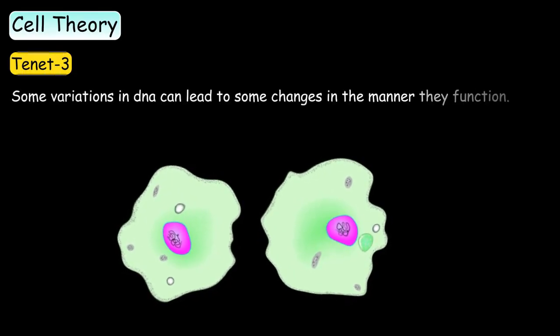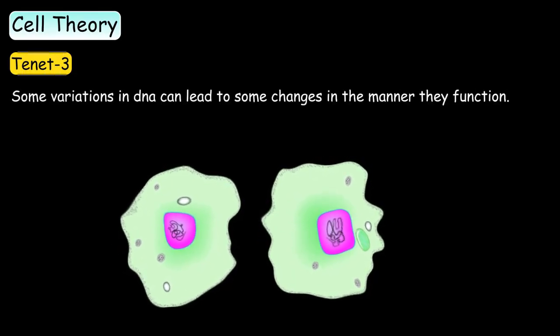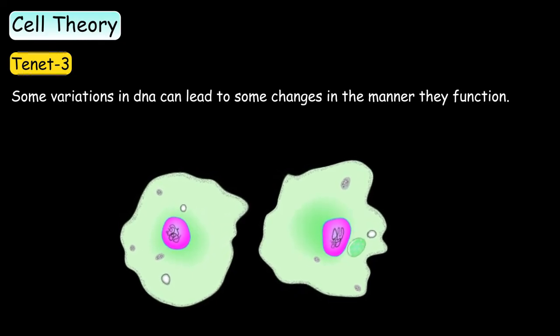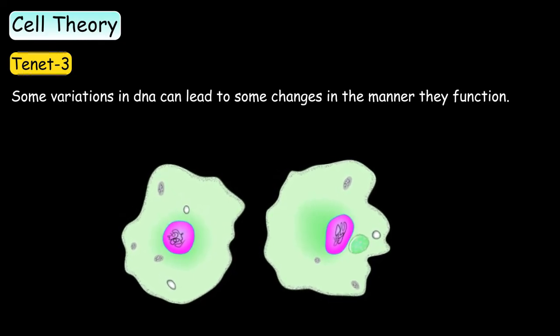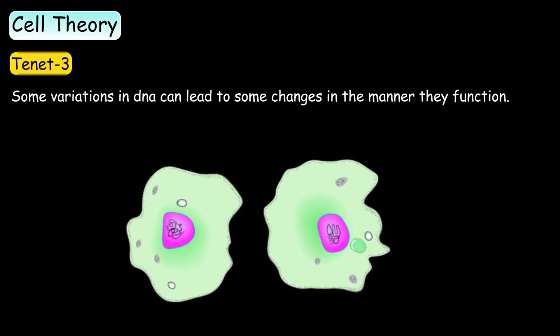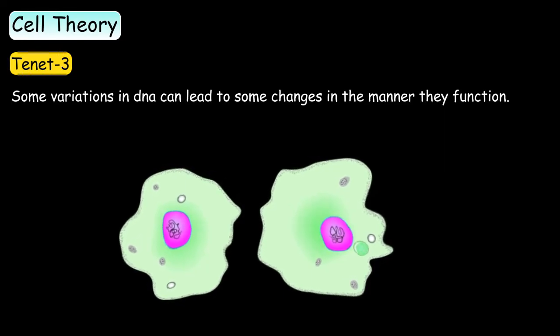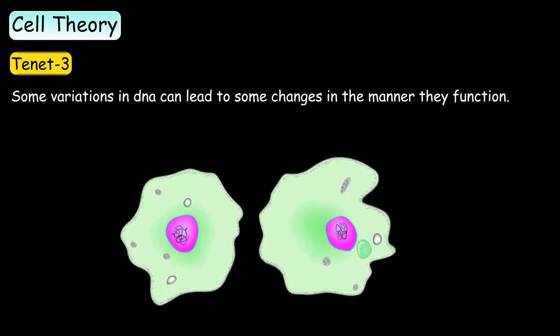Some variations in DNA can lead to some changes in the manner of their function. So, these were the three basic tenets of cell theory. We will learn more about cell theory in detail in our higher sections.